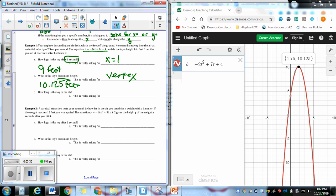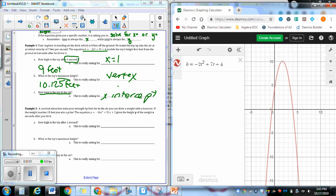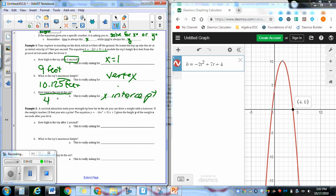And then part C says, how long is the toy in the air? How long is something in the air is really looking for an x-intercept. I'm looking for where I land. And again, we follow graphs from the left, we throw it, and then it lands. So how long it was in the air is going to be the x-intercept on the right. And in this case, that is 4 seconds, because we are measuring the time in seconds.